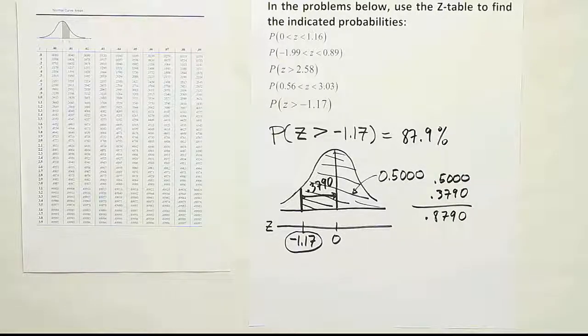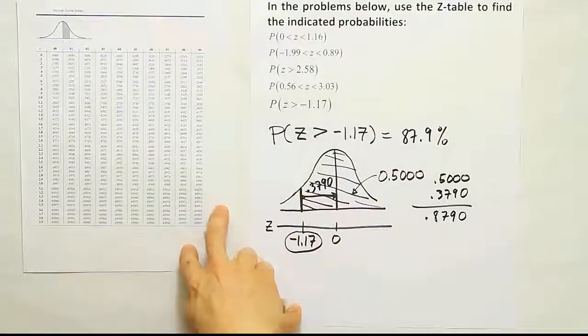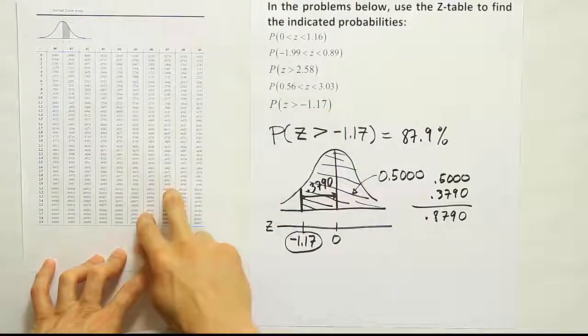And that finishes our problem. At this point, you've done all five unique cases that can be accomplished with this bell curve table. So if you're looking for probability on this table, every problem you encounter will be similar to one of these five problems.